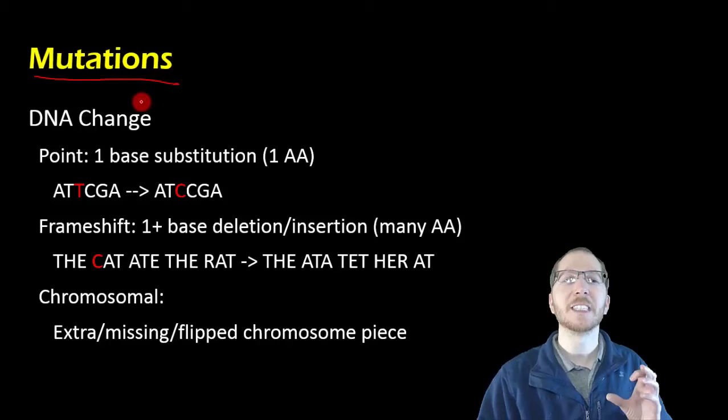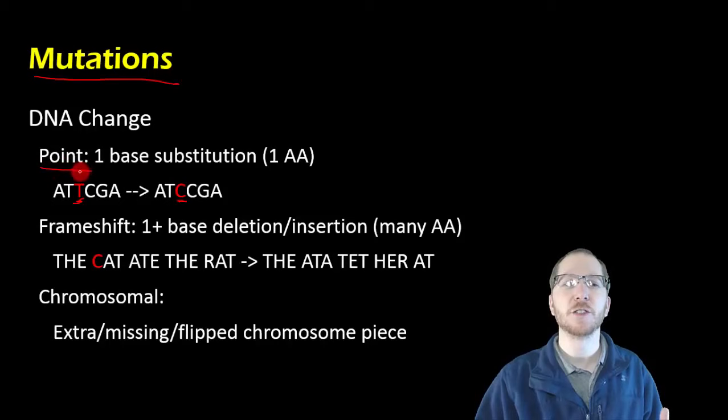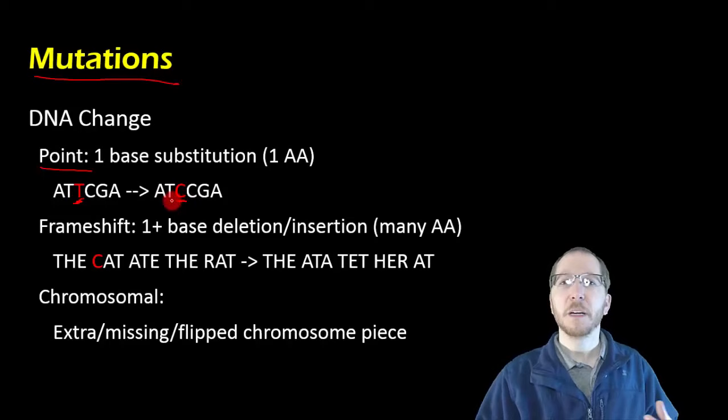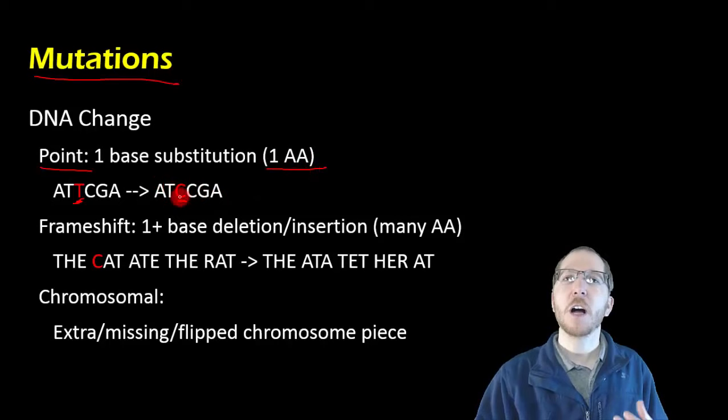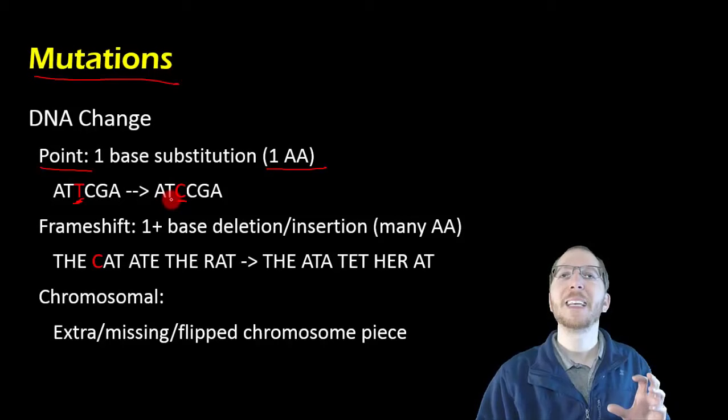So point mutations are going to be some of the most common mutations that we'll see, where we're just changing one particular nucleotide. Most of the time this is just a substitution, so we're swapping out a T for a C. Now this might seem like we've changed it definitely, this is going to have an effect, but in many cases a point mutation won't even have an effect, because it only can change one amino acid max, and we've talked about this idea that because our genetic code is a redundant code, where there's many different codons that code for the same amino acid.